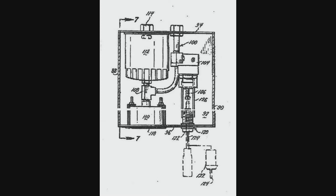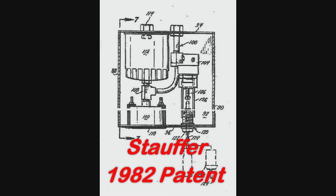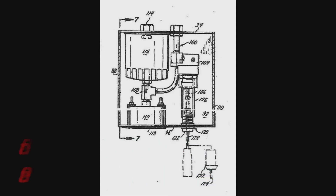Another factor needed to provide quality MIG gas control was defined by Stauffer in a 1982 patent. He stated quality weld starts require a controlled amount of initial gas to purge air from the weld start area and gun nozzle. He used a reservoir in his device to store that needed extra gas when welding stopped.